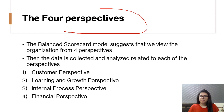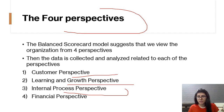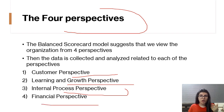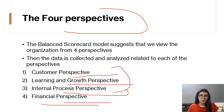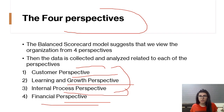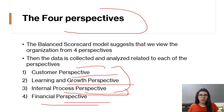Now let's look at the four perspectives in the Balanced Scorecard: the Customer Perspective, the Learning and Growth Perspective, the Internal Process Perspective (also known as the Business Process Perspective in some books), and the Financial Perspective. So in the Balanced Scorecard we are analyzing three other perspectives along with the financial perspective. Customers are really important for the organization, and learning, growth, and innovation are key factors for success.